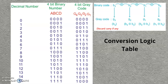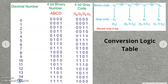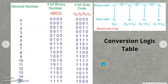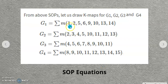Now the conversion logic table is ready. Our job is to write the SOP output equations for the 4 output bits G1, G2, G3, and G4. To write the SOP equation for G1, look at the G1 column — wherever the output is 1, that is a min-term. Collecting all min-terms where the output is 1 gives G1 = Σm(1, 2, 5, 6, 9, 10, 13, 14).